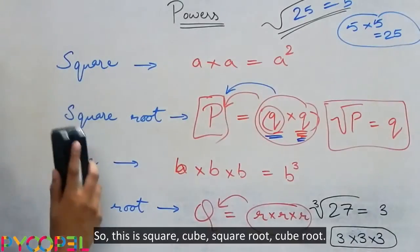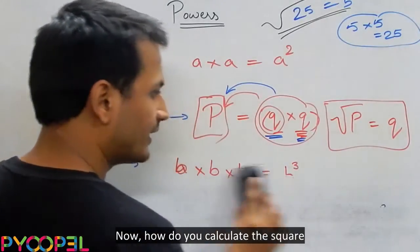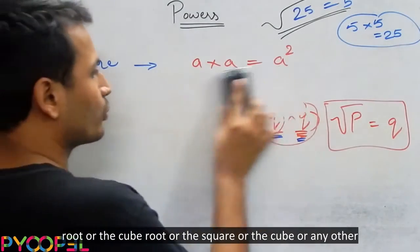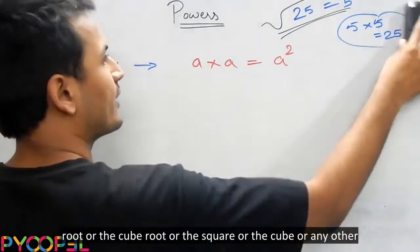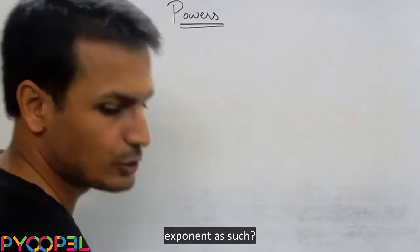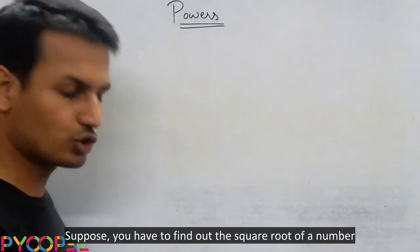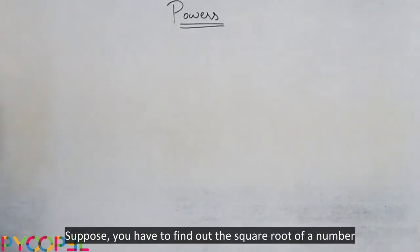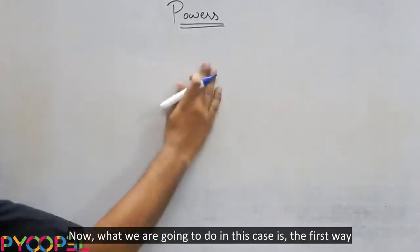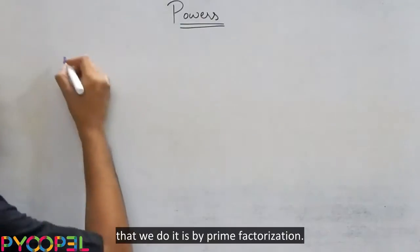So this is square, cube, square root, and cube root. Now, how do you calculate the square root, cube root, square, cube, or any other exponent? Suppose you have to find out the square root of a number. The first way that we do it is by prime factorization.